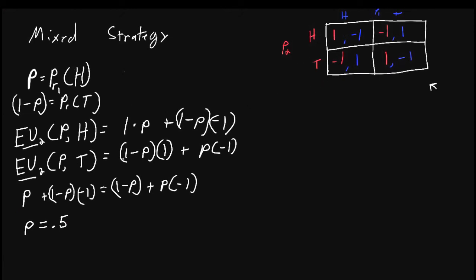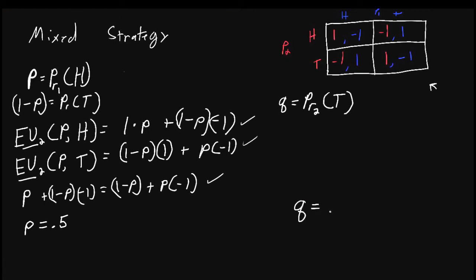We can do the same thing for player two. Let q equal the probability that player two plays tails. For player one to be willing to mix, his expected utility from playing heads and tails must be the same in both cases — when he plays heads and when he plays tails — given player two mixes with probability q. We write out the expected utilities, set them equal, and we can see that for player one to be willing to randomize, player two must randomize with probability 0.5.